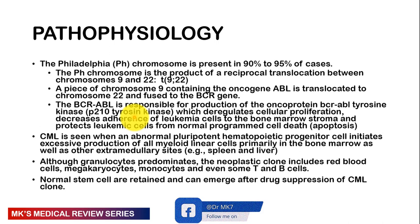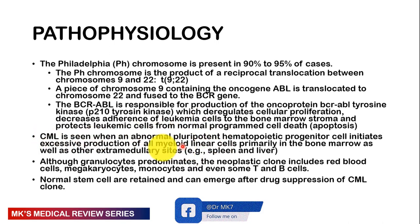Because of this BCR-ABL tyrosine kinase, the cell is incapable of killing itself through apoptosis and keeps dividing, leading to an increase in leukemic cells. In CML, an abnormal pluripotent hematopoietic stem cell initiates excessive production of myeloid lineage cells, primarily in the bone marrow but also in extramedullary sites like the spleen and liver. So you would expect splenomegaly and hepatomegaly. Granulocytes may predominate. The neoplastic clones include red blood cells, megakaryocytes, monocytes, and sometimes even B and T cells.